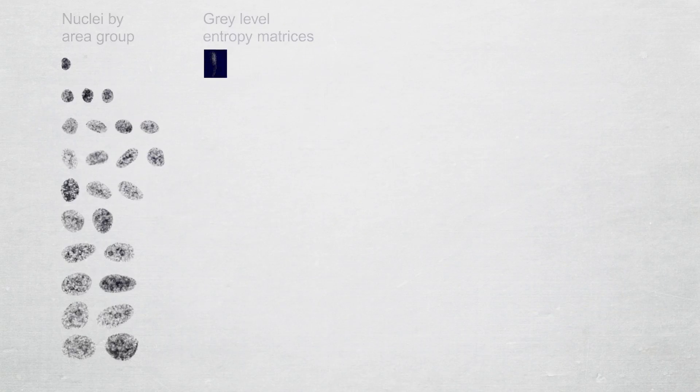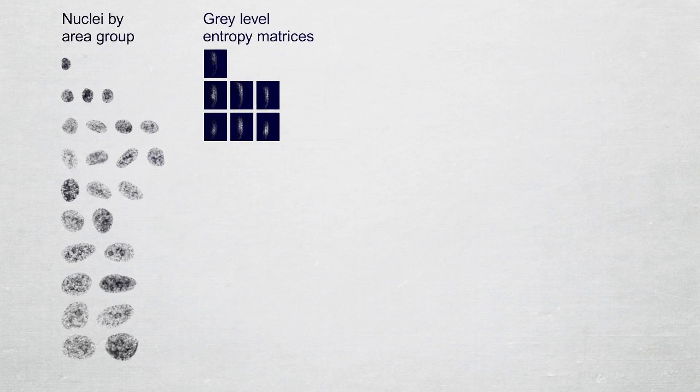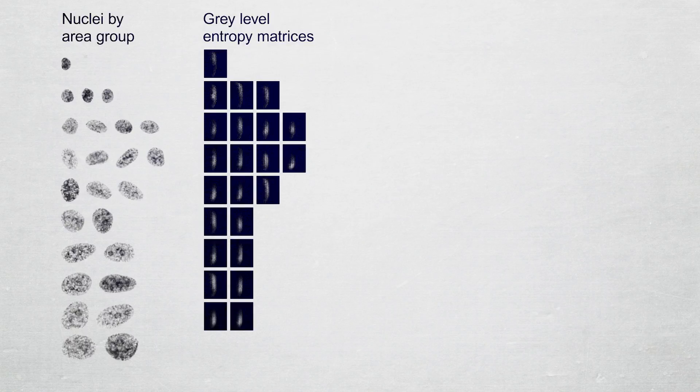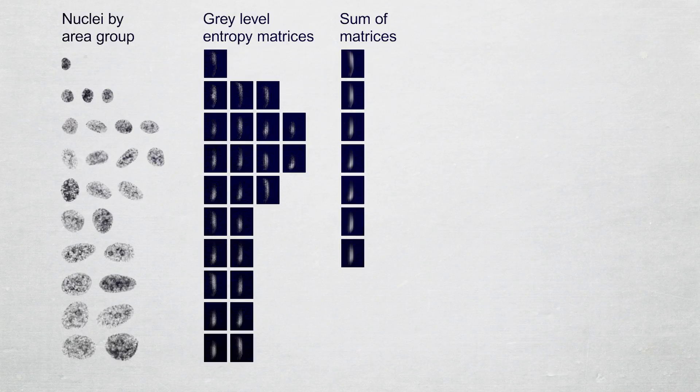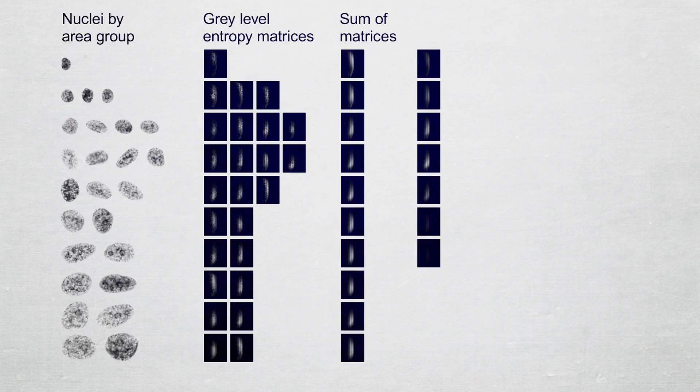The gray level entropy matrix is computed for every nucleus acquired from the tumor sample. In each area group, the set of gray level entropy matrices are summed and the sum is divided by the total number of analyzed nuclei.